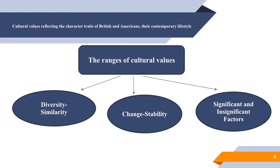When we communicate with strangers, we are more aware of the range of their possible responses and of the uncertainty of their predictions, so we create intentional mental maps of reality based on our experiences. When we communicate across cultures, whether non-verbally through gestures and actions or verbally through language, we do so based on our mental maps. Moreover, we should know about some of the ranges of cultural values: diversity and similarity, change and stability, significant and insignificant factors.